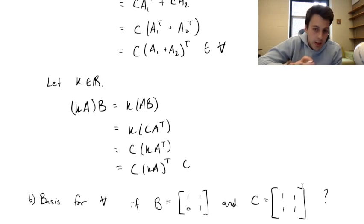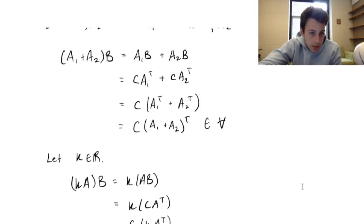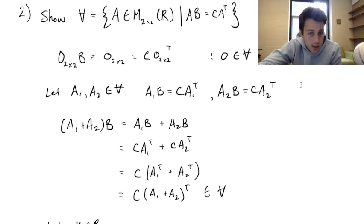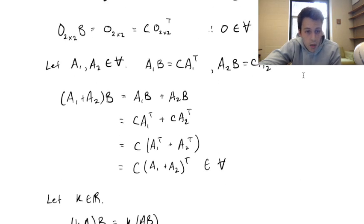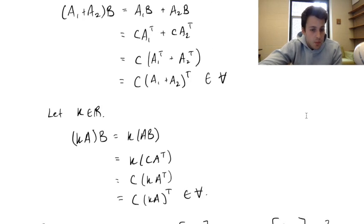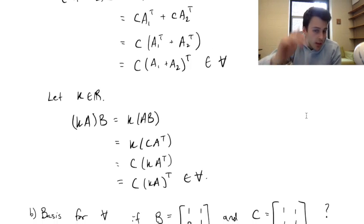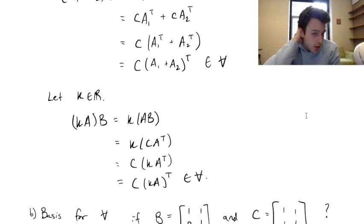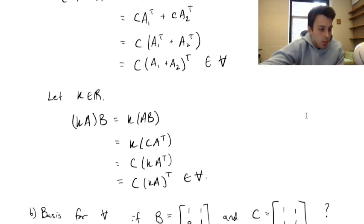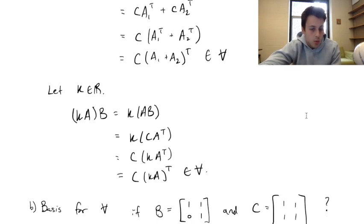It has passed all three parts of the subspace test: the zero matrix is in V, addition of two matrices in V results in another matrix in V, and a scalar times a matrix in V results in a matrix in V.